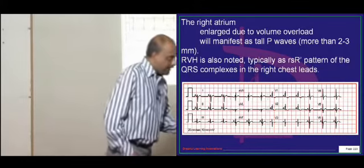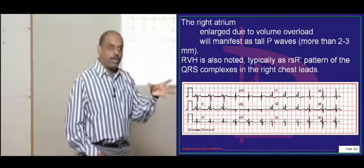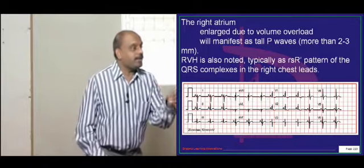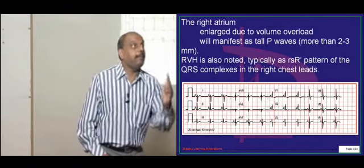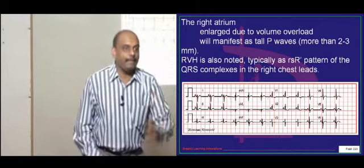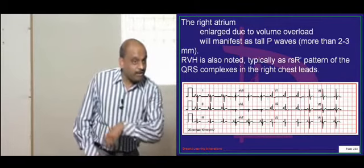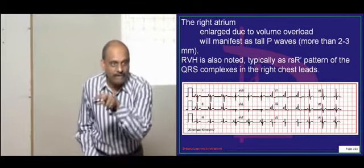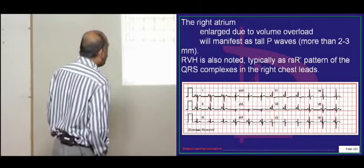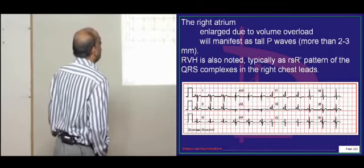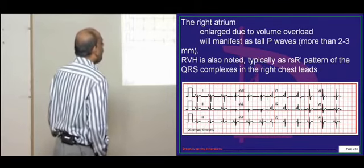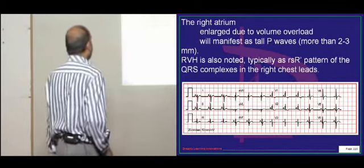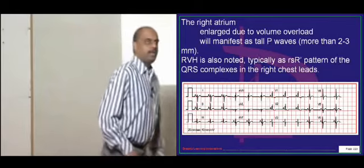Because the left atrial blood is shunting into the right atrium, the right atrium gets volume overloaded and becomes dilated. If the right atrium dilates, what is the change in the P wave? P becomes peaked. Typically peaking will occur. If the left atrium becomes dilated, as what you see in mitral stenosis, it becomes M-shaped, double peak will appear. Here what you are seeing in lead V1 is a prominent P wave, tall P wave which is more than 2 to 3 millimeters.